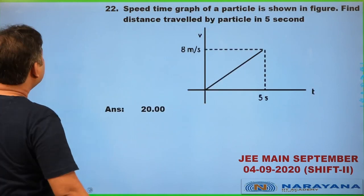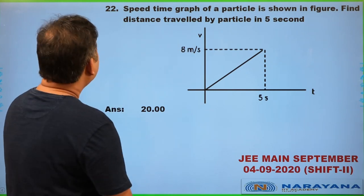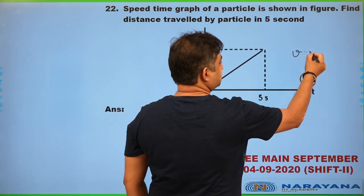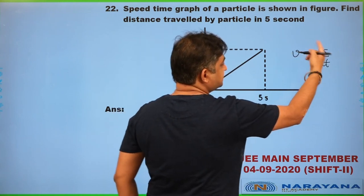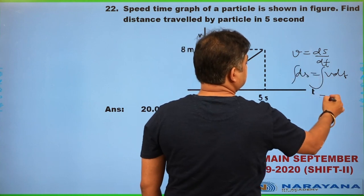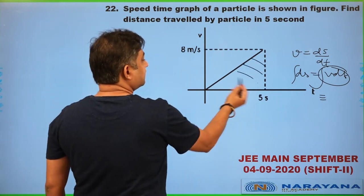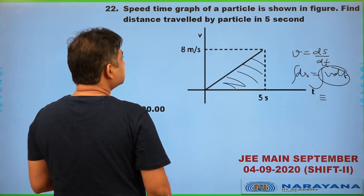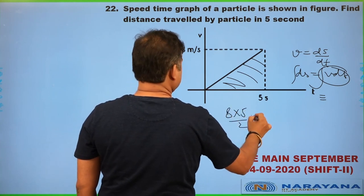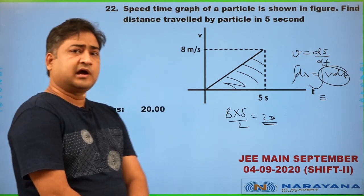Question 22: a speed-time graph of a particle performing rectilinear motion is given; find the distance traveled in 5 seconds. Since distance = ∫v dt, the area under the speed-time curve gives total distance. The area = (1/2) × 8 × 5 = 20. The answer is 20. A very simple question taking hardly one minute.